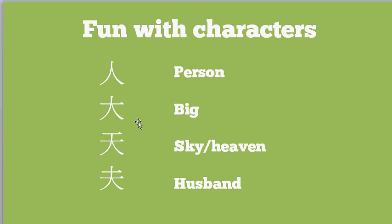The second one, the character for 'big,' looks like a person with their arms stretched out to their side as big as they can be — and that's 'big,' so you can make a little story like that. Then if you take a big person and put a roof over them, that's 'sky' or 'heaven.' And then this one is kind of interesting: it's basically sky or heaven, and think of the head of the person sticking through the roof or through the sky. Yes, that means 'husband' — so take what you want from that one.